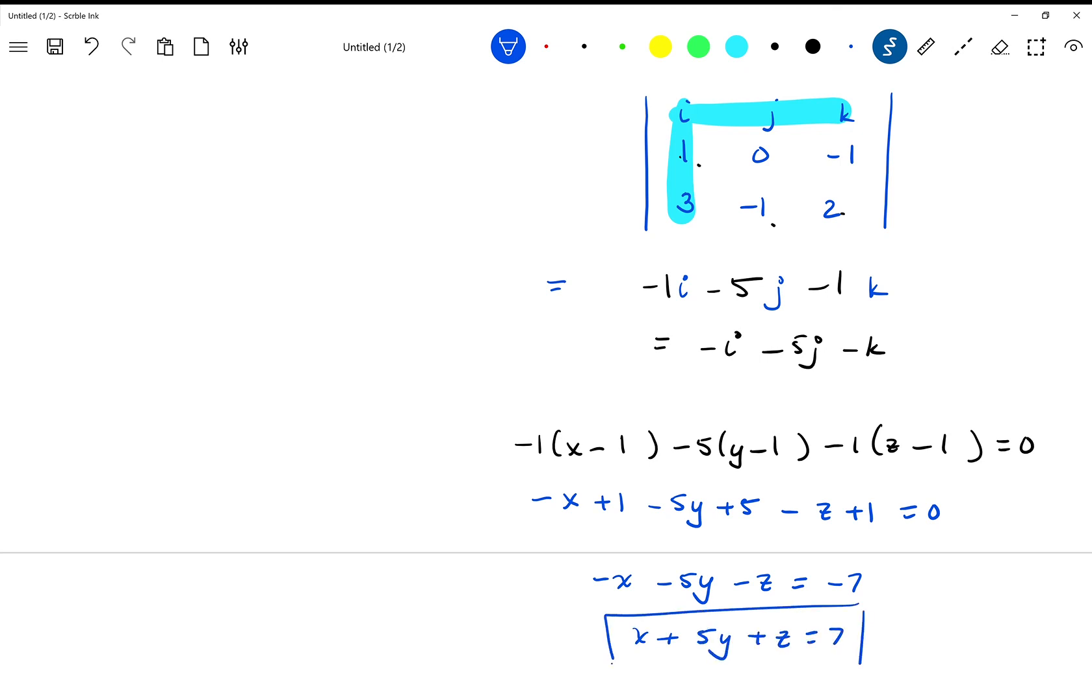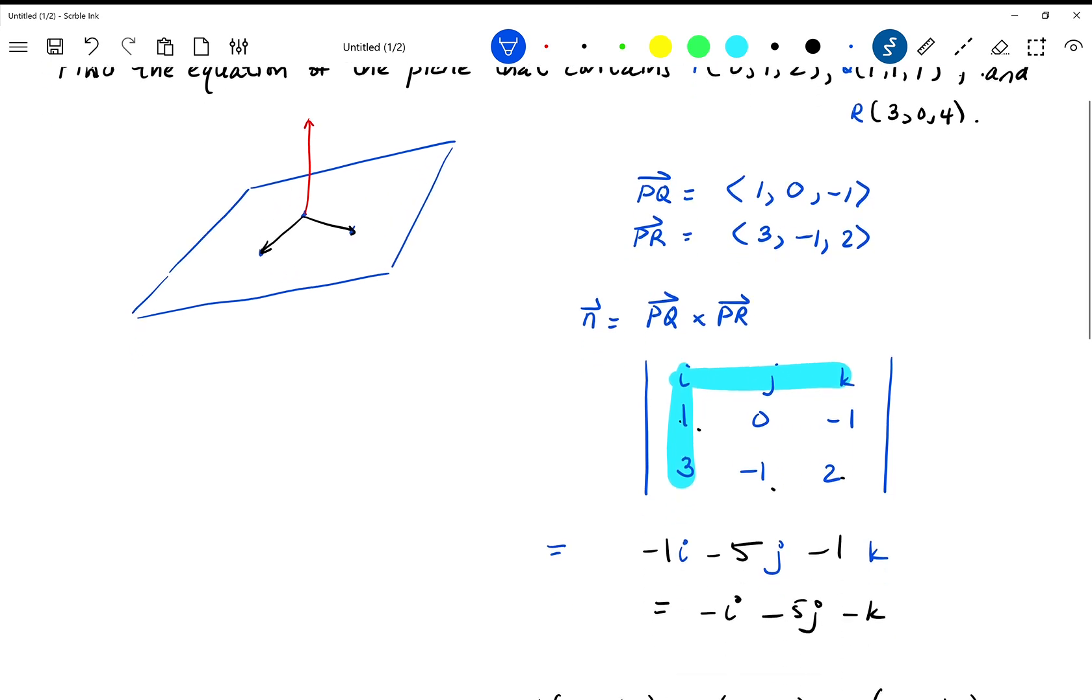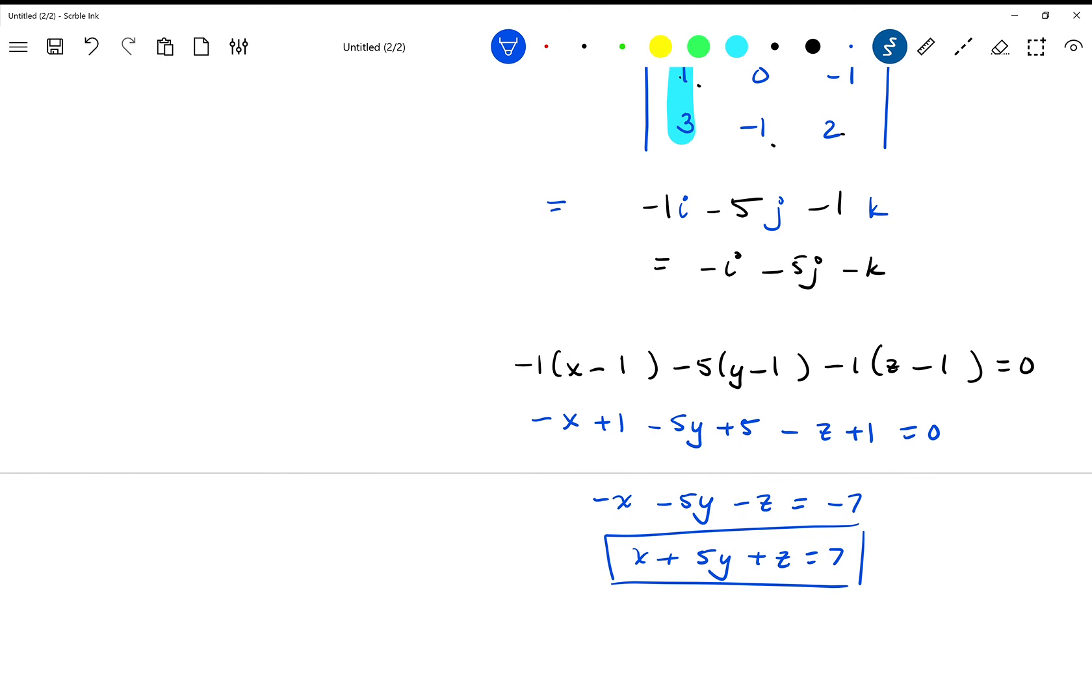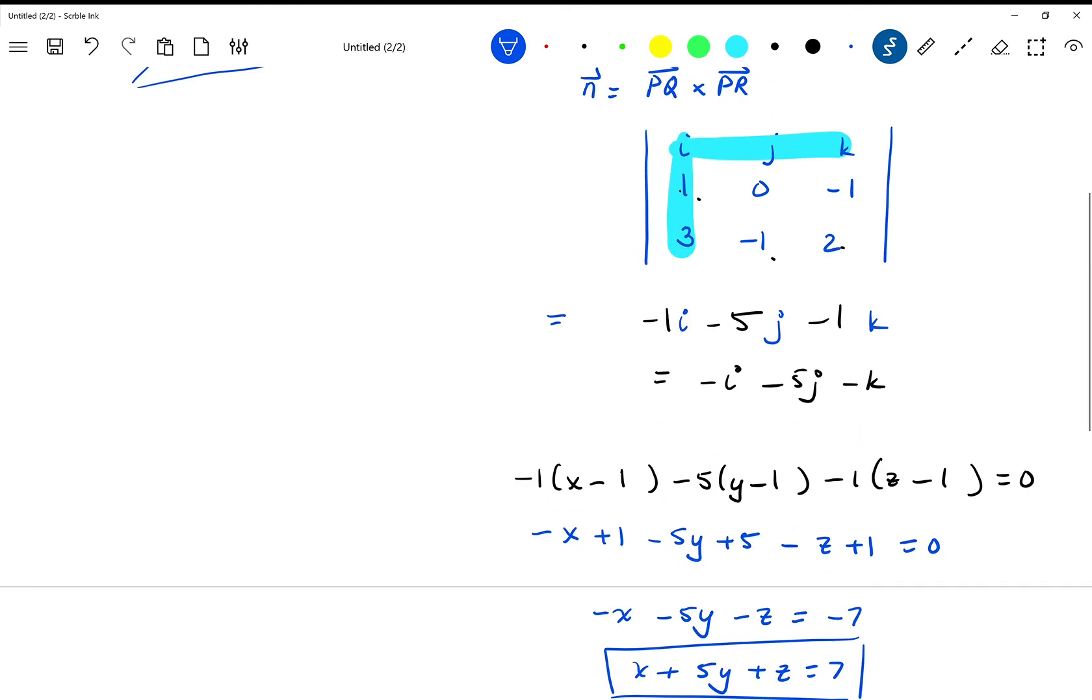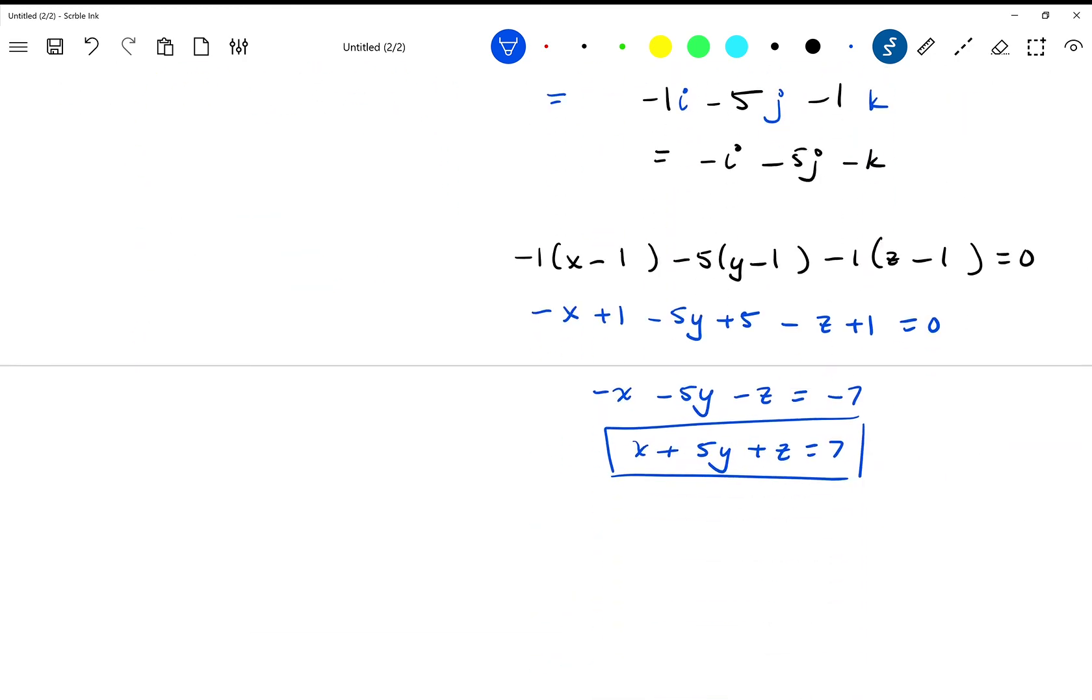And that is the equation of our plane that passes through the three points. If you want to check your answer, you can substitute all three of the points: zero, one, two; one, one, one; and three, zero, four. And it does appear to work. I see that one, one, one works. I see that three, zero, four works. And I also see that zero, one, two—so that would be zero, five, two—yes, that does work. So there's the equation of our plane passing through three points.